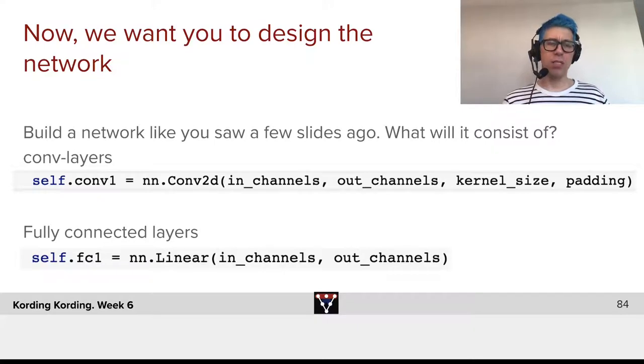Well, it will consist of ConvLayers. So we will need to, in the initialization, instantiate the relevant Conv2D. We're talking about 2D convolutions. That requires us to specify how many channels come in, how many channels go out. Now, channel is the number, is the features. Then we need to specify the kernel size, and we need to specify padding.